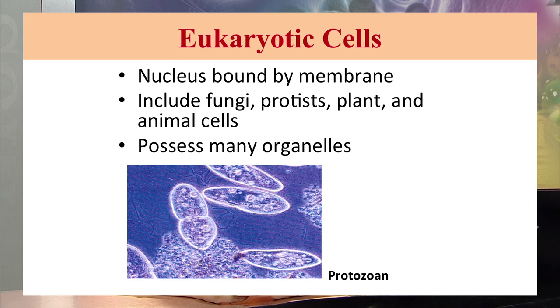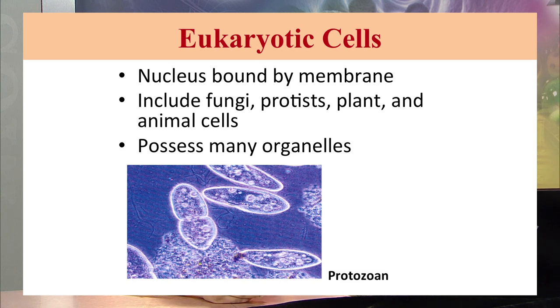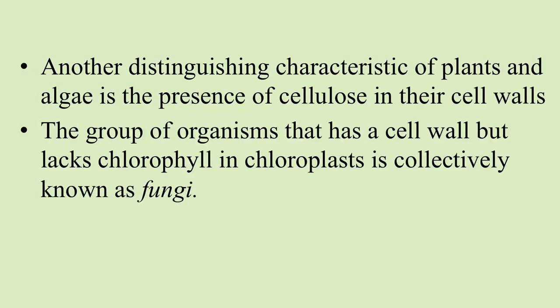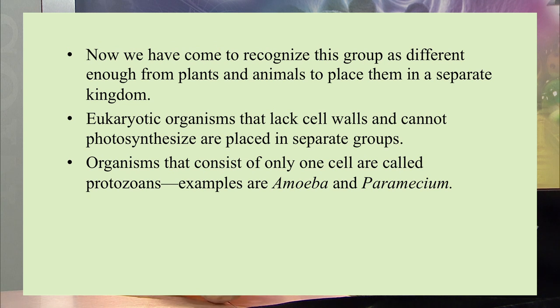Eukaryotic cells contain a true nucleus and most of the membranous organelles. Eukaryotic cells can be further divided into various categories based on the combination of organelles present — differentiating them into the different kingdoms: plants, fungi, protozoa, algae, and animalia. Plants and algae are set apart as they contain chlorophyll, giving them their green color. Both plants and algae also contain cellulose in their cell walls. Fungi contain a cell wall but lack chlorophyll and chloroplasts.